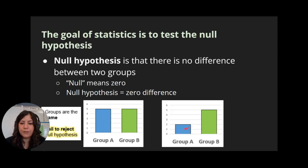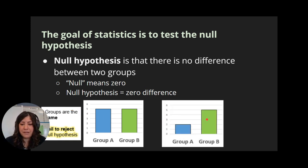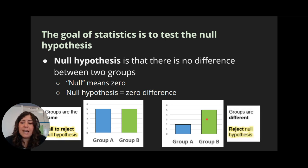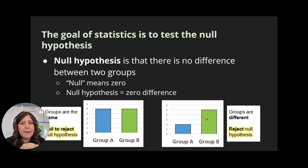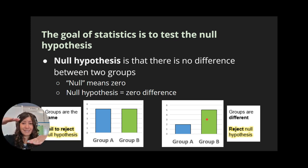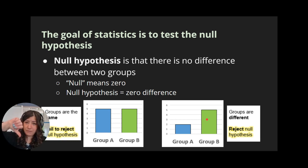On the other hand, if group A is really different than group B — if those data sets look very, very different — then we would say that we reject the null hypothesis, thumbs down. The null hypothesis states there's no difference, so if there is a difference, that means the null hypothesis wasn't right, so we reject it.